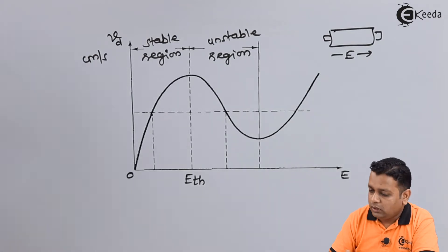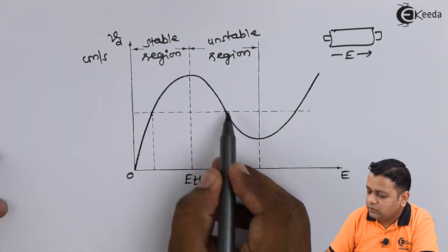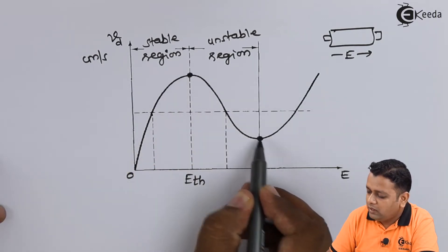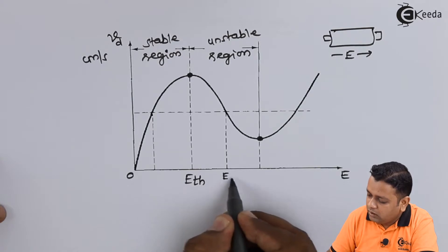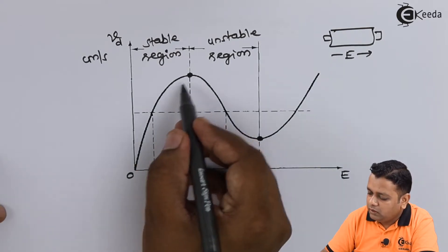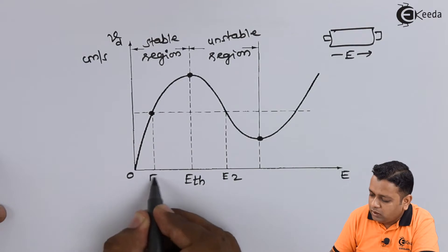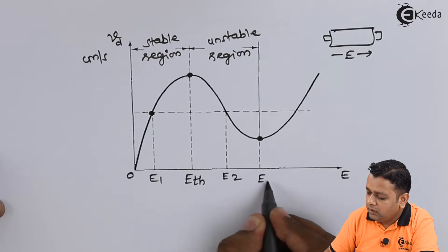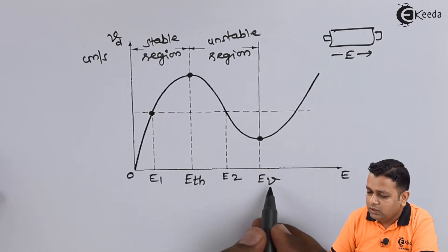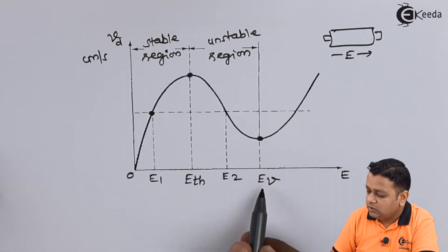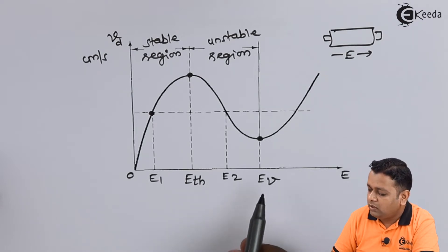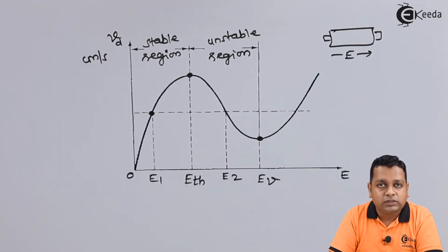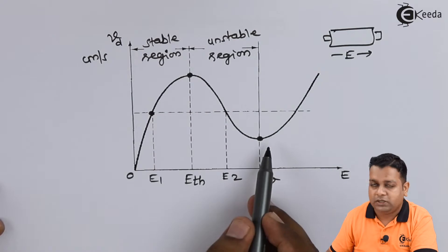Within the unstable region, there is a midpoint between the peak current and the valley current. We mark E2 and the middle point as E1. The valley point is represented as E_V — the valley electric field — and the threshold electric field is also marked. The important region in this diagram is the unstable region.